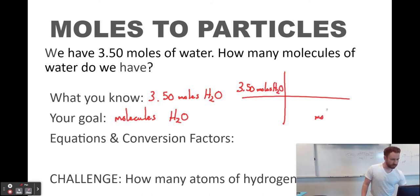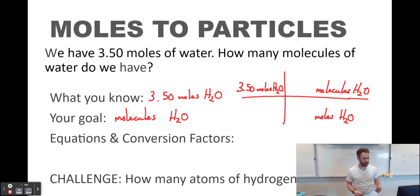Moles of H2O is going to be our unit down here. We already know that because that's what we want. We want to be able to cancel out moles of H2O. And molecules of H2O is our desired unit. We're going to put it up here. What's the equivalency of moles to molecules of H2O? It's Avogadro's number. 1 mole is 6.02 times 10 to the 23rd molecules of H2O.